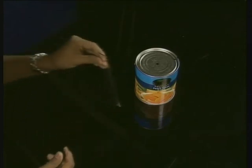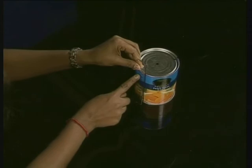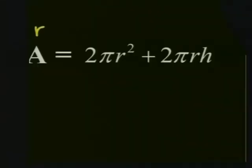Now using my ruler let's measure the height. On my can I get 12 centimeters. Right, now we have all the information we need to substitute into the formula. We can find the total surface area. We know that the radius is equal to 5 centimeters and the height is equal to 12 centimeters.